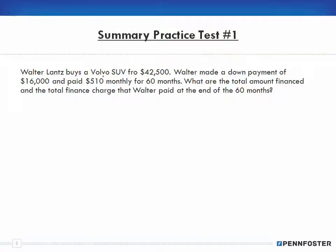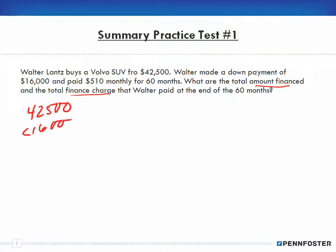Number one: Walter Lance buys a Volvo SUV for forty-two thousand five hundred dollars. Walter made a down payment of sixteen thousand and paid five hundred and ten dollars monthly for sixty months. What are the total amount financed and the total finance charge that Walter paid at the end of the sixty months? The purchase price is forty-two thousand five hundred, and he puts a down payment of sixteen thousand.